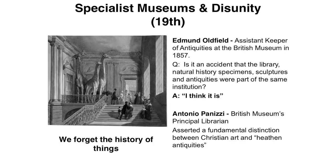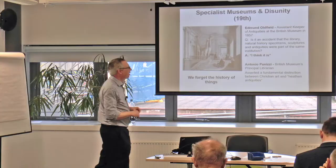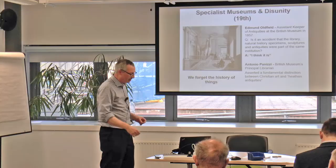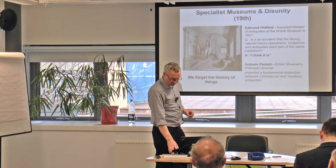There's another example: Panizzi, the principal librarian of the British Museum, asserting a distinction between Christian art and heathen antiquities. The argument about how to separate objects and where they should be displayed was happening constantly — the National Gallery asserting that classical art objects should belong to them, the British Museum saying no, they're classical and part of their collection. The important point is we start to forget the reason why these things were put together in the first place.